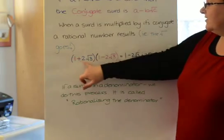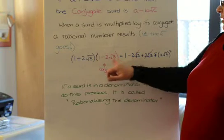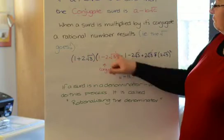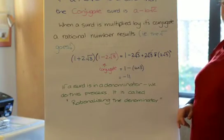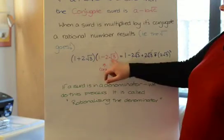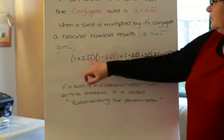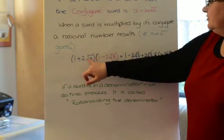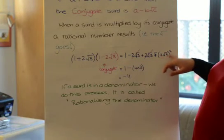So, here we had one plus two root three, very original. And I multiplied it by the conjugate, one minus two root three. Now, you'll notice, hopefully you'll notice, that that looks like difference of two squares. So, obviously, one times one is one. One times negative two root three is negative two root three. Two root three times one is two root three. And two root three times negative two root three is negative two root three all squared.